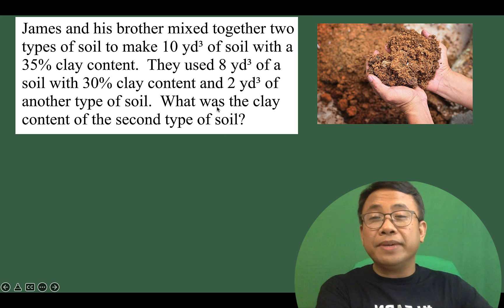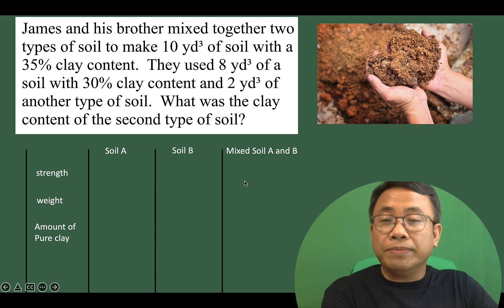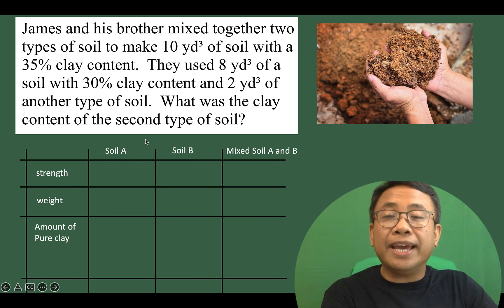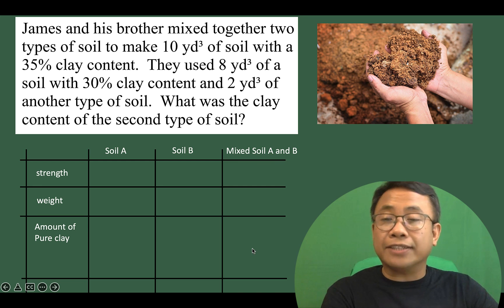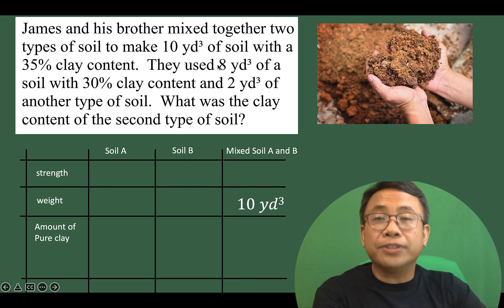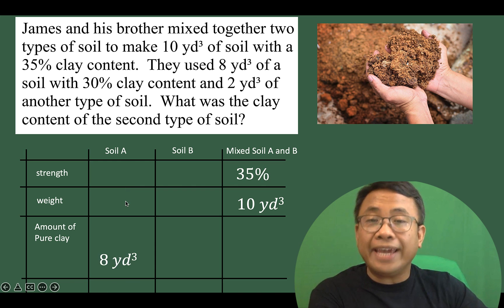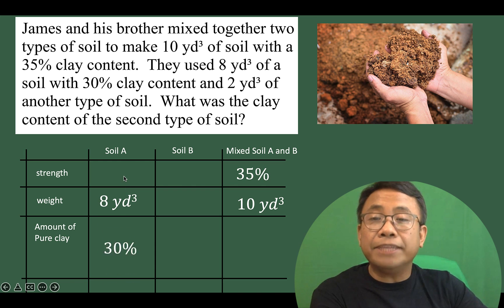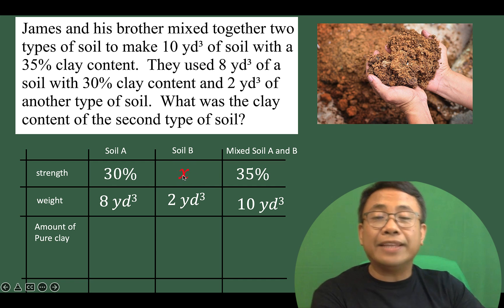By just reading this problem it could appear very confusing, but again the technique is to create a table. We have soil A and soil B, and we mix these two types to arrive at the mixture. We have 10 cubic yards of resulting soil mixture with 35% clay content. The volume of soil A is 8 cubic yards with 30% clay content. Soil B is 2 cubic yards, and we do not know how many percent of clay is in soil B, so we let that be x — x is a decimal number.